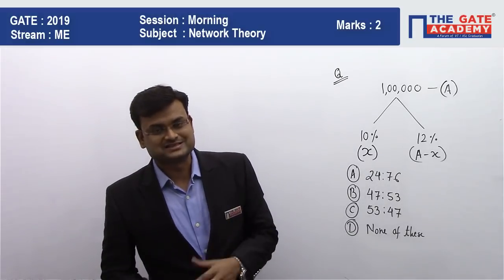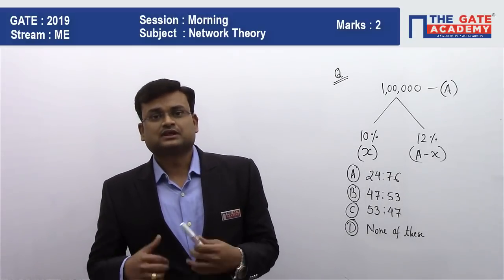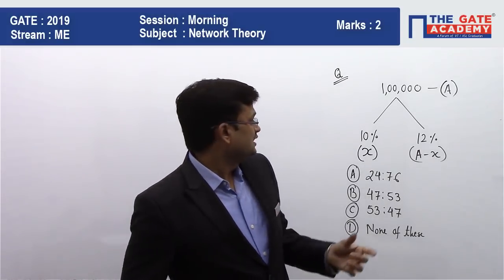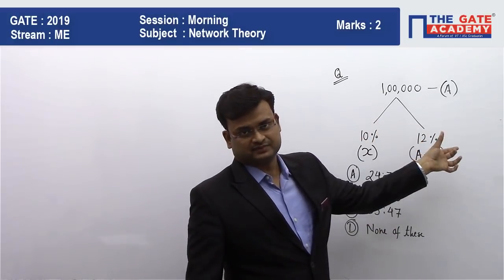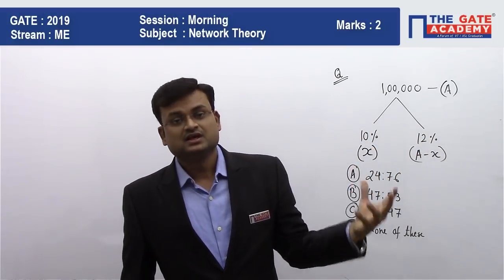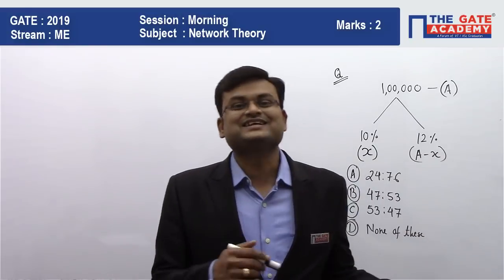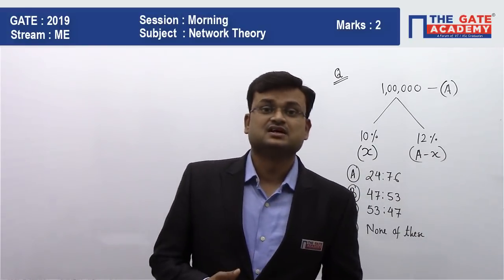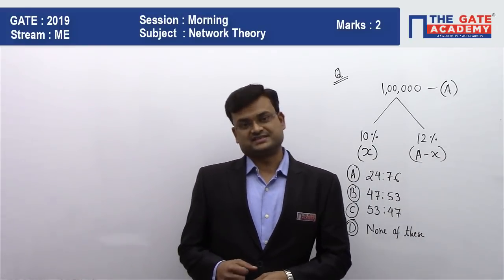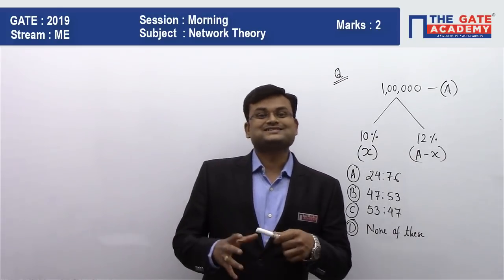The question further says that if we interchange the profits of these avenues, the person will be losing 120 rupees. So what is the ratio of investment in the first part versus the second part?